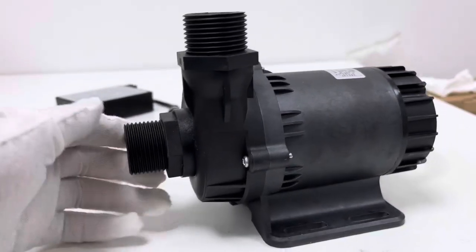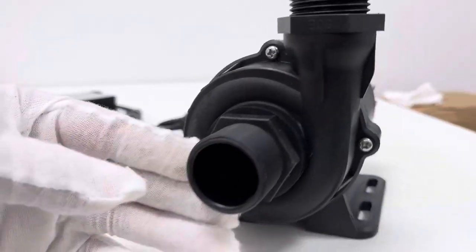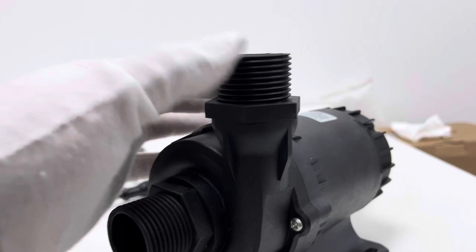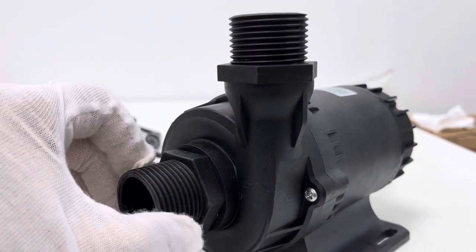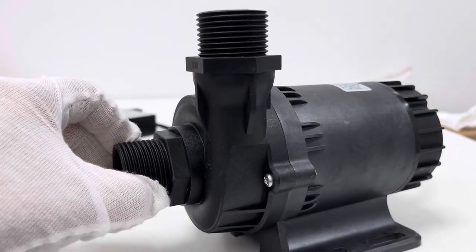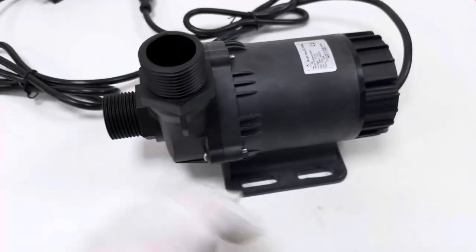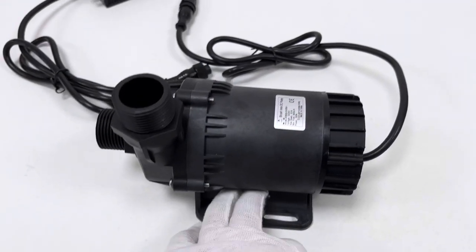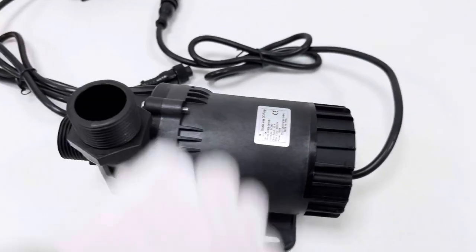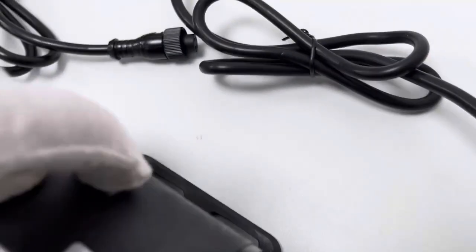Let's take a look at the pump's appearance. This is the pump inlet, this is outlet. Both are one-inch threaded with external diameter about 32 millimeters. This is the pump base, together with the pump body as a whole for convenience of installation.